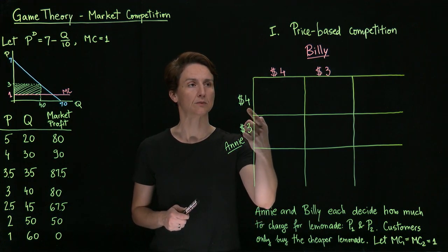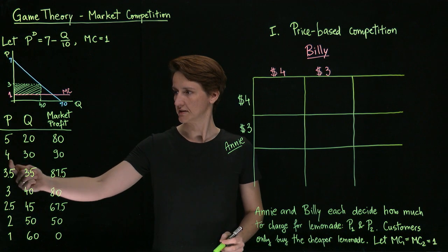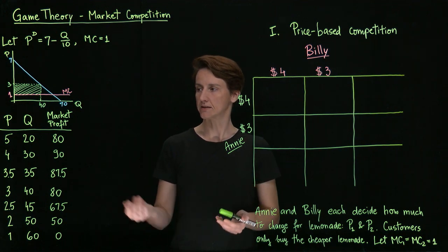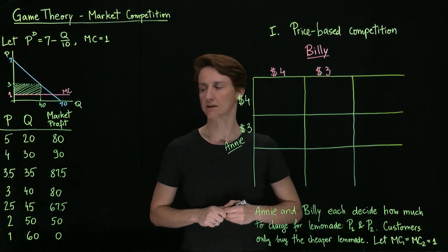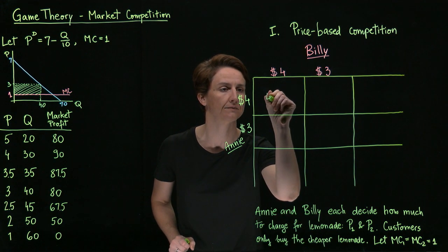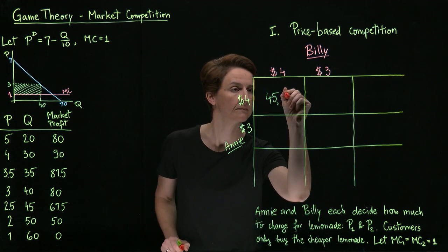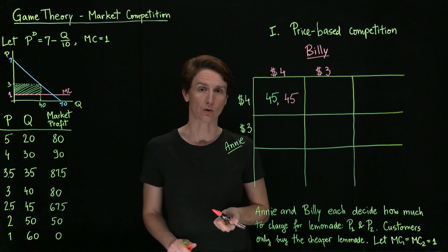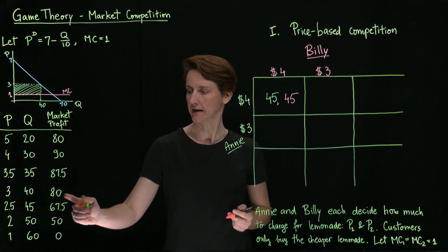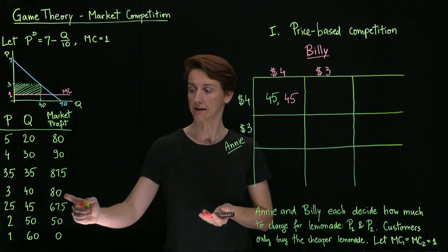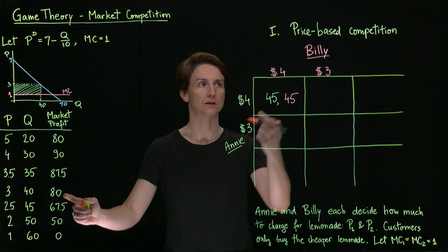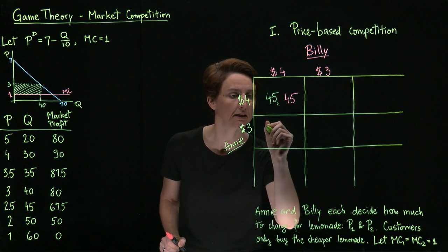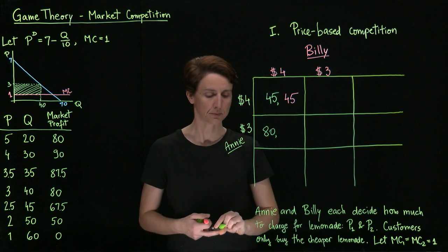If they each set price at $4, then they'll sell 30 units total and earn a total profit of $90. Under the assumption that they split the market evenly, that means each of their profits is $45. What about if Annie charges $3 and Billy charges $4? At $3, there is $80 worth of profit in the market, and Annie would get all of that because no one would be willing to buy at the higher price. So Annie's profit would be $80 and Billy's would be $0.